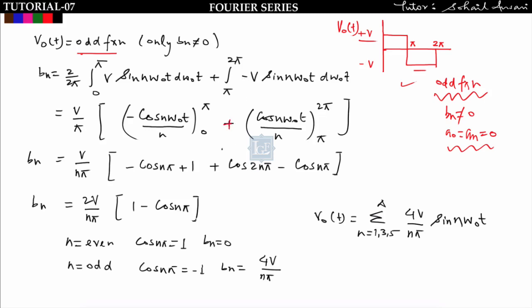Taking V common gives V/(nπ). Evaluating the limits: we get [−cos(nπ) + cos(0)] + [cos(2nπ) − cos(nπ)]. Since cos(0) = 1 and cos(2nπ) = 1 always, we get 1 + 1 = 2 from those terms, and −2cos(nπ) from the cosine terms. Taking 2 common gives b_n = (2V)/(nπ) × (1 − cos(nπ)).